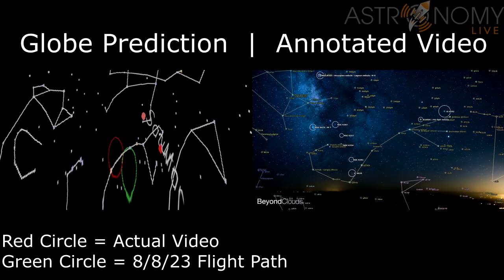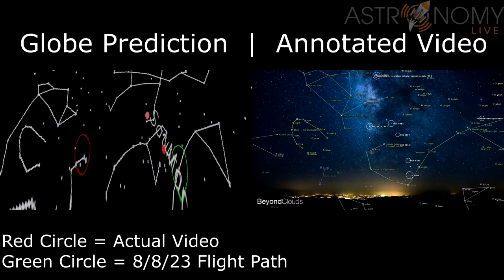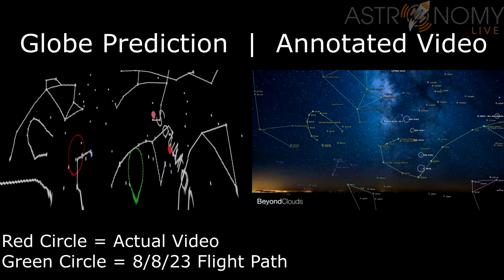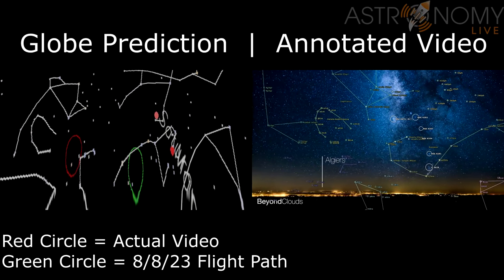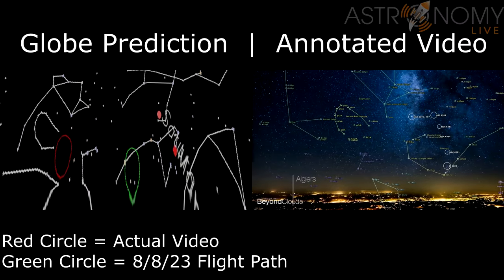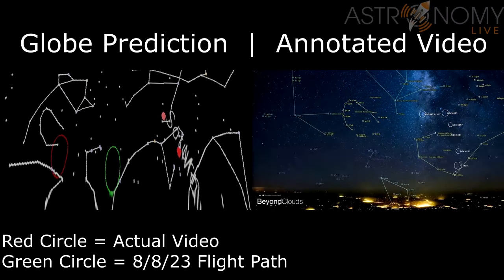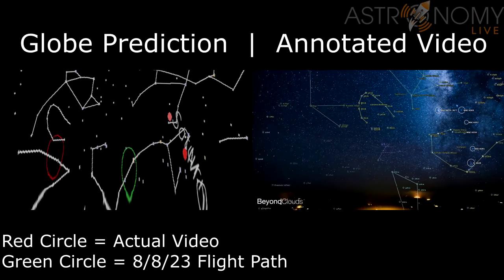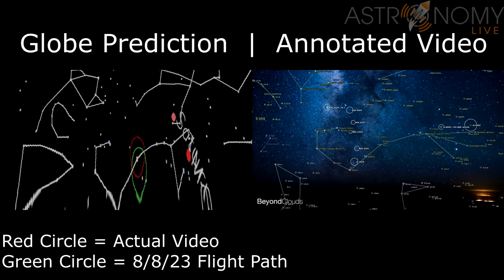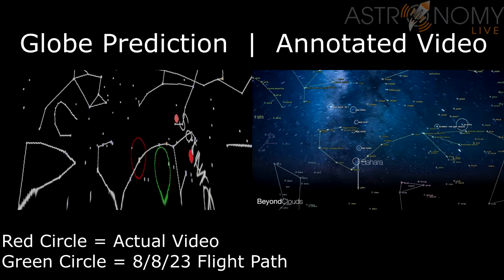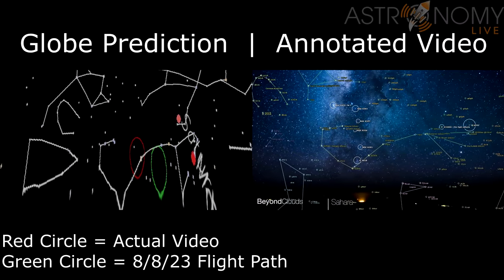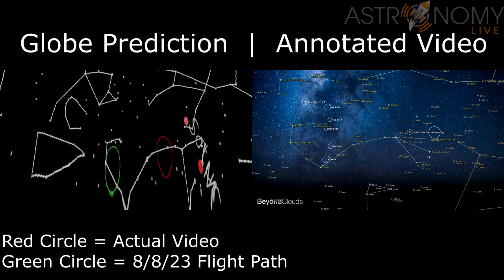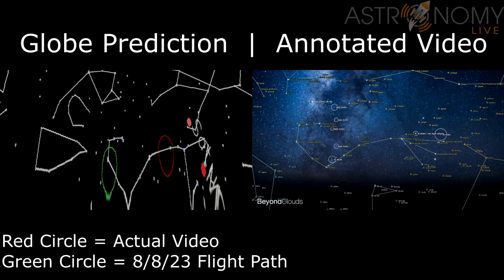In the side-by-side, the left shows the re-projected view from my planetarium software simulating the flight, and the right shows the original video annotated with constellation figures. The way astrometry.net drew constellation figures differs slightly from my planetarium software in terms of which stars it connects, but the stars are the same and the overall motion of the constellations matches in both the globe prediction and the original annotated video. So no, this flight does not debunk the globe — in fact it agrees with the globe perfectly. Thanks for watching, and clear skies.